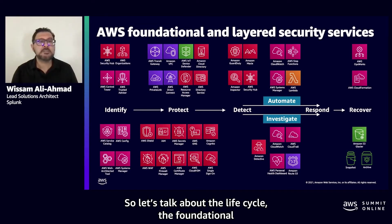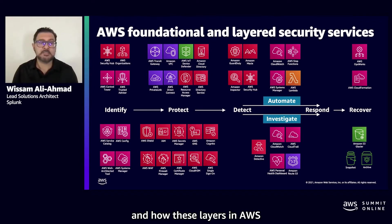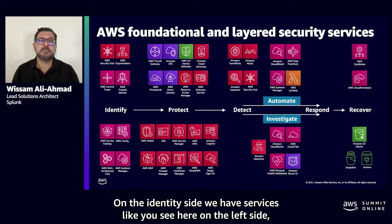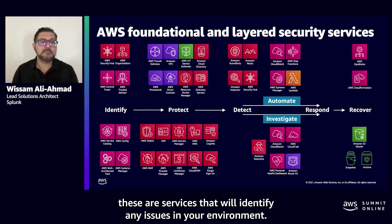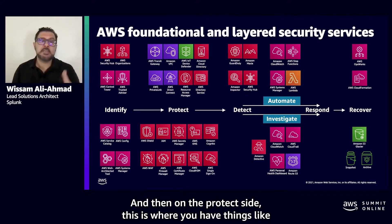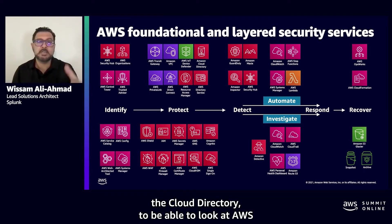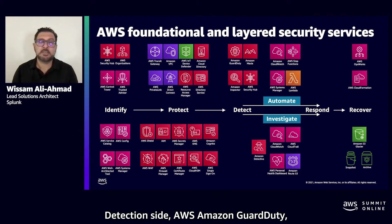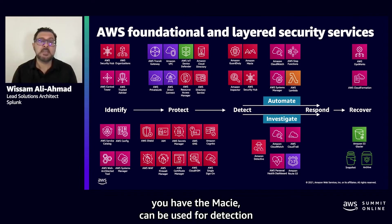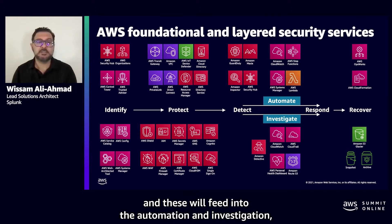Let's talk about the foundational layers and how the AWS security services map into this lifecycle. On the identity side, we have services like Security Hub and AWS Control Tower to identify any issues in your environment. On the protect side, there are things like cloud directory, AWS Shield, IAM, and the firewall to make sure you have the right configurations. On the detection side, Amazon GuardDuty and Amazon Macie can be used for detection. AWS Security Hub feeds into the automation, investigation, and response. When we have things like CloudTrail data, those event alerts come in and you can generate a response, including CloudFormation aspects needed for that.